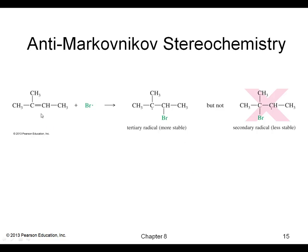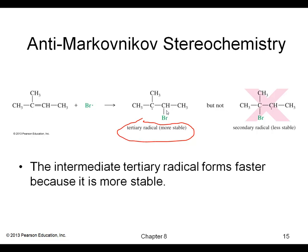The reasoning for this anti-Markovnikov result is that a more stable radical forms by having the bromine add to the less substituted carbon of the double bond.